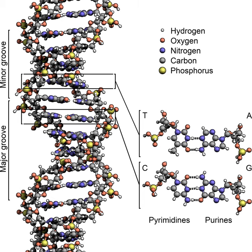In living organisms, DNA does not usually exist as a single molecule, but instead is a tightly associated pair of molecules. These two long strands entwine like vines in the shape of a double helix. The nucleotide repeats contain both the backbone of the molecule, which holds the chain together, and a base, which interacts with the other DNA strands in the helix.